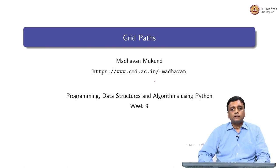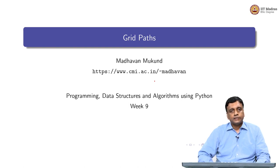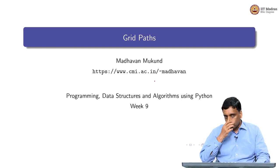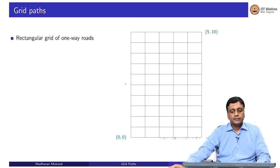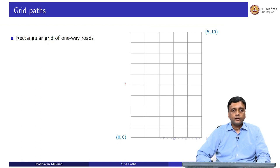We have seen the concept of memoization and dynamic programming in the context of Fibonacci, which is a kind of very artificial example. So let us look at a more interesting example. This problem is called grid paths. Suppose we have roads arranged in a rectangular grid — this is often called a Manhattan grid, because the city of Manhattan has roads like this.